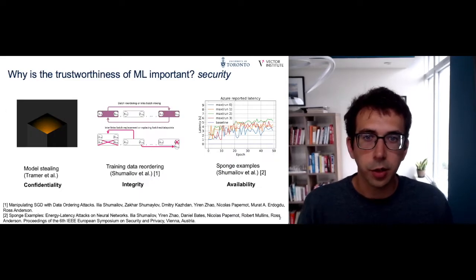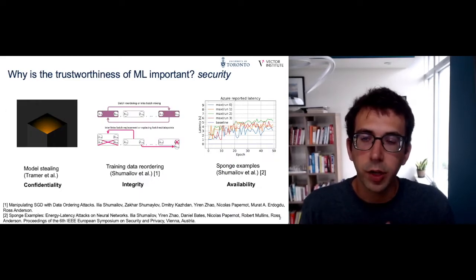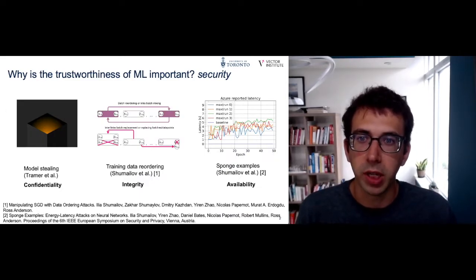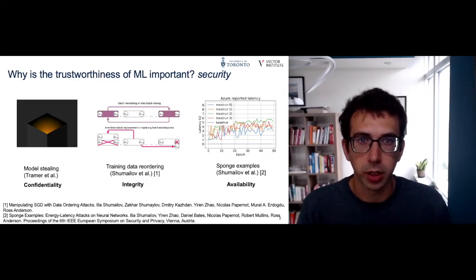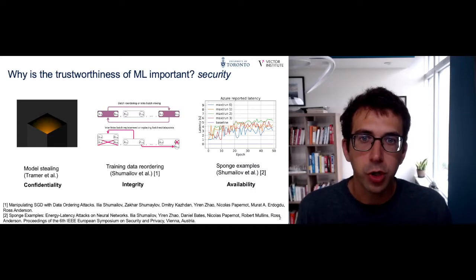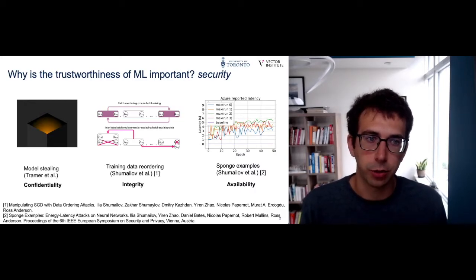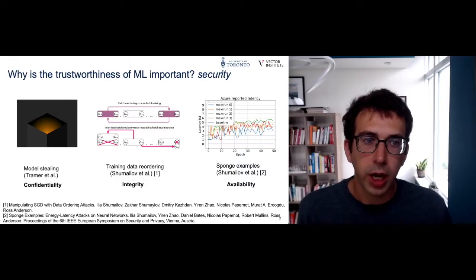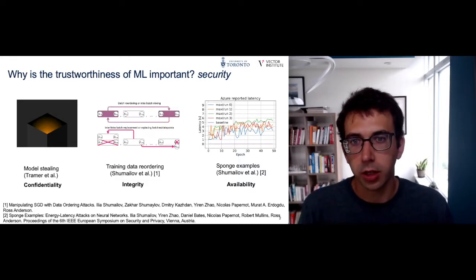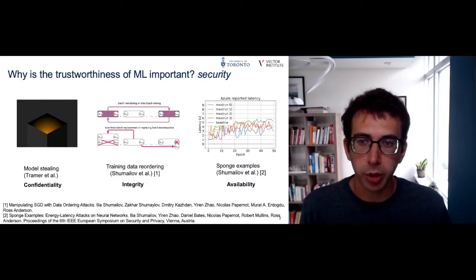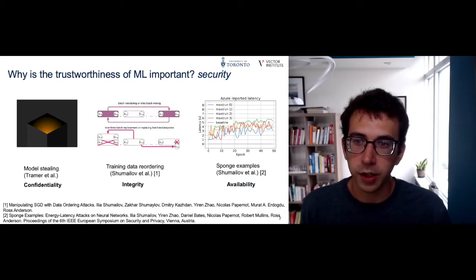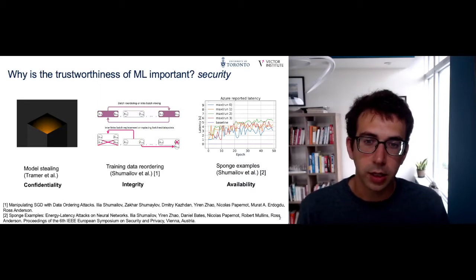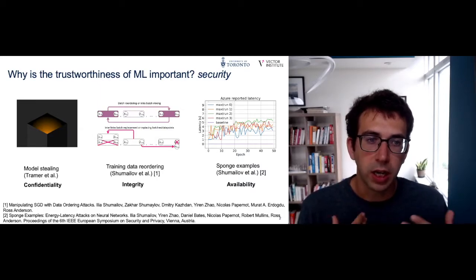Let's get started by figuring out what we mean by trustworthy machine learning. The first component of trustworthy machine learning is security, where we typically triage the work done in this area around three components: confidentiality, integrity, and availability.